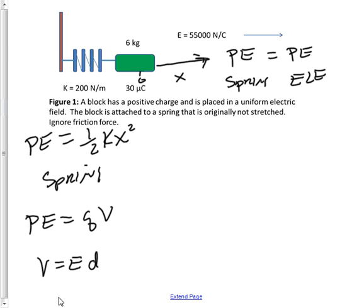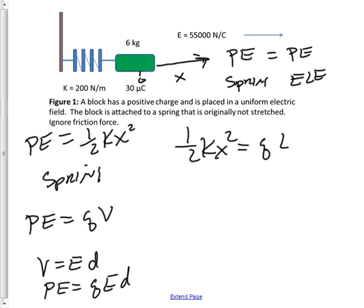Substituting that into our equation, potential energy is then equal to qEd. Now we will substitute into this expression the value for our potential energies. We will then have one-half kx squared is equal to qEd.